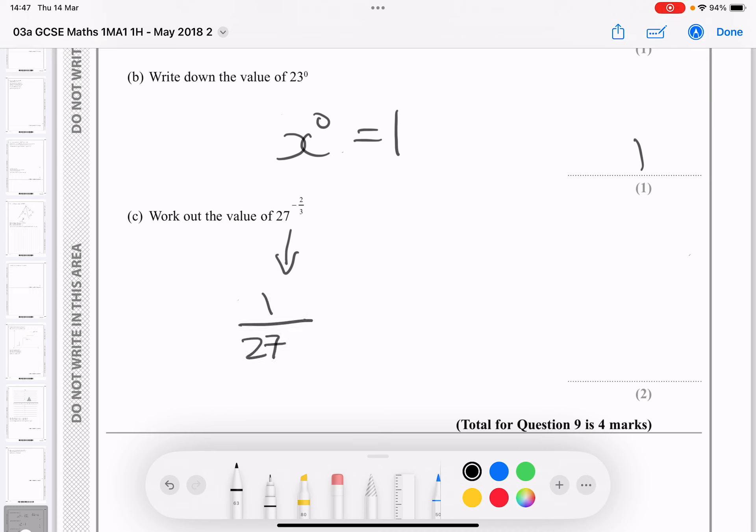So I do 1 over, and then what I've got is 27 to the power of 2 thirds. Now I'm going to look at the 27 to the power of 2 thirds, and I'm just going to look at 27 to the power of a third first,